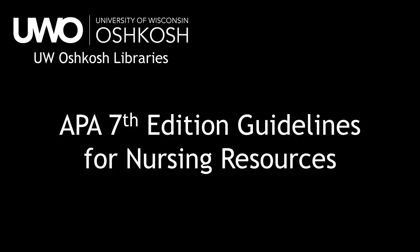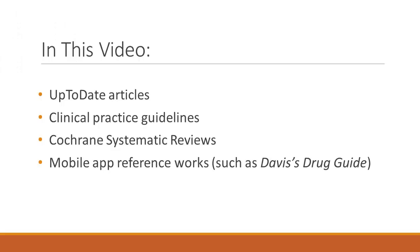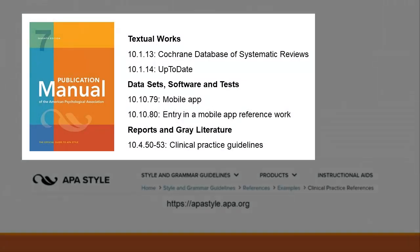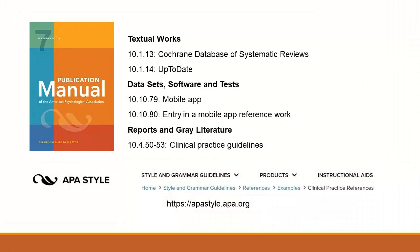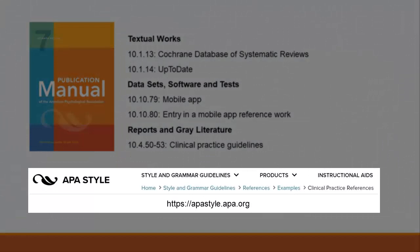APA 7th edition provides specific guidelines for some commonly used nursing resources. In this video, we'll talk about the guidelines for citing UpToDate articles, clinical practice guidelines, Cochrane systematic reviews, and mobile app reference works, such as Davis' Drug Guide. You can find these guidelines in your 7th edition APA manual. Also, all of this information, as well as details on citing drug information and lab or diagnostic manuals, can be found on the APA style website under Clinical Practice References.